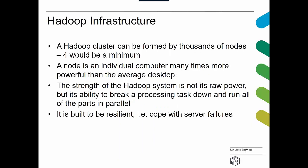A Hadoop cluster could consist of thousands of nodes. Each node is an individual computer, more powerful than the average desktop, with more RAM, disk, and memory. The minimum number of nodes you'd really need would be four, but you can have many thousands — the likes of Yahoo and Google have thousands in their clusters. The strength of Hadoop is not its raw power, but its ability to break a process down and run all parts in parallel — effectively divide and conquer.